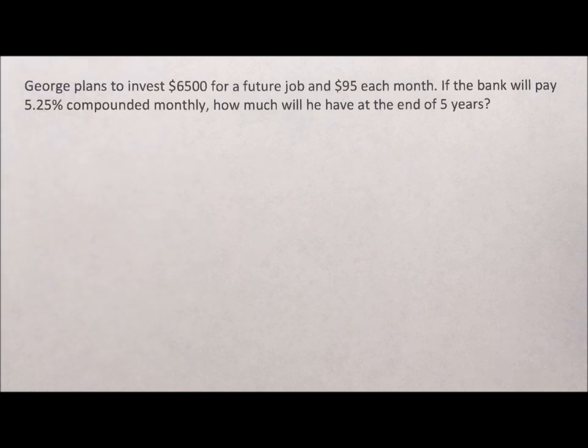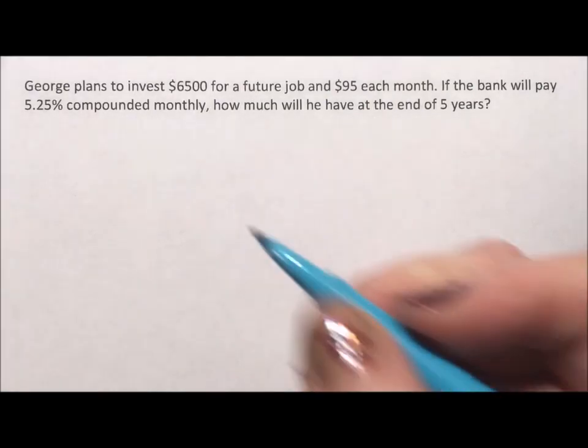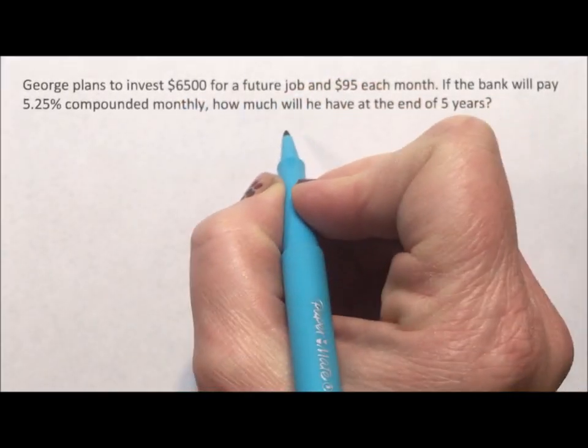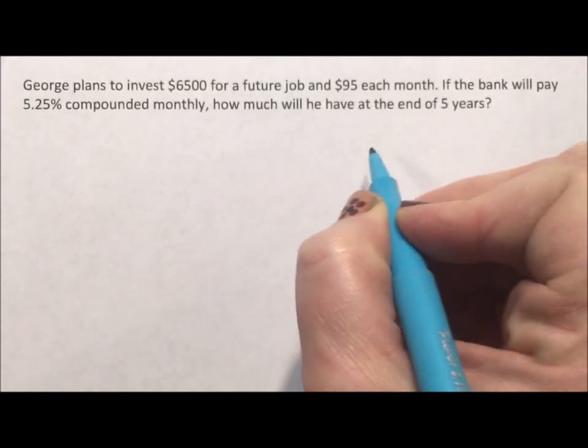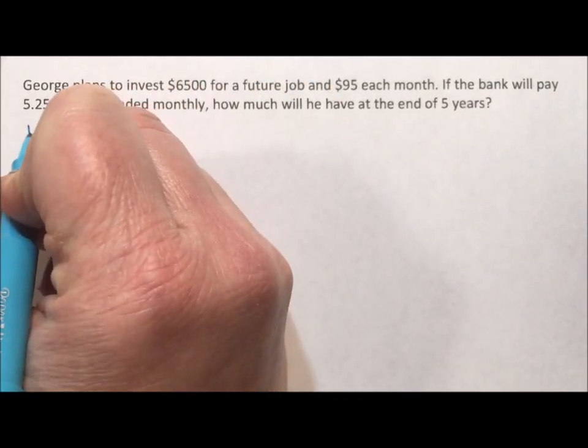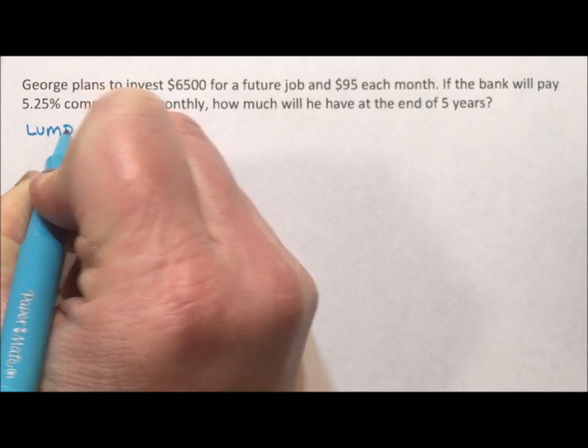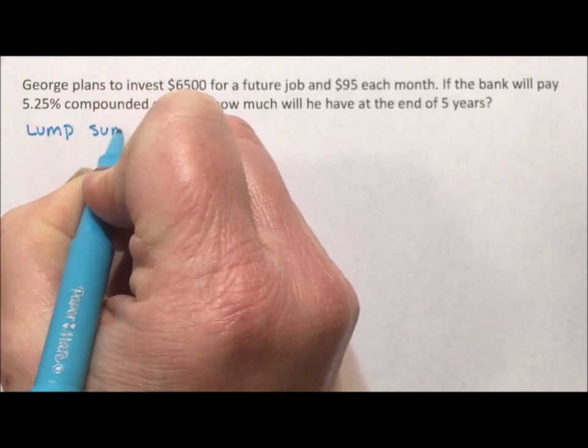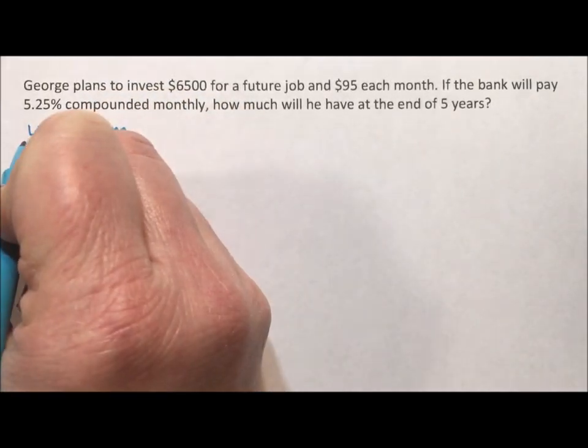Alright, so he's just trying to build some money so that in five years he can start a new job. There's two things going on and you have to take each of the two things separately. First of all, he has a lump sum that he's investing and all the money is going into the same account, but each is going to be calculated differently.